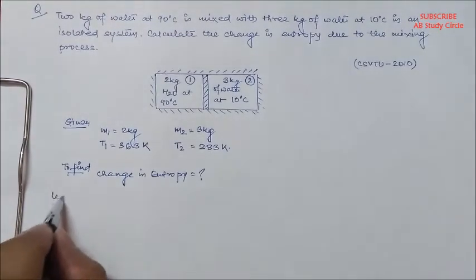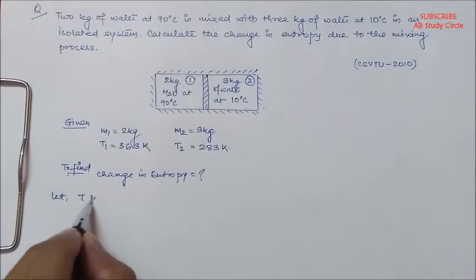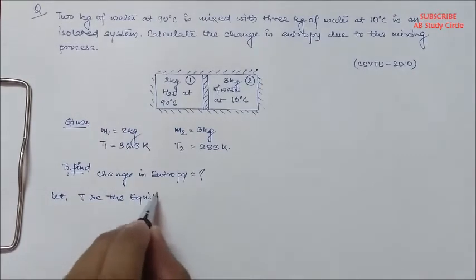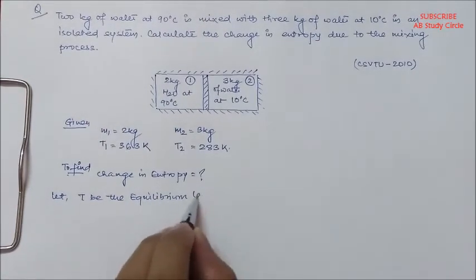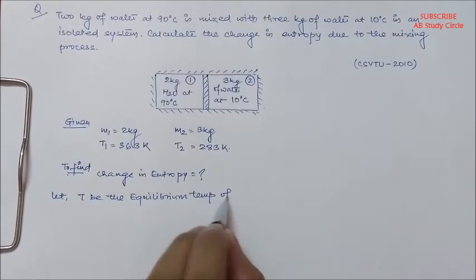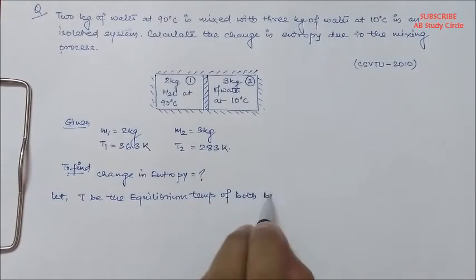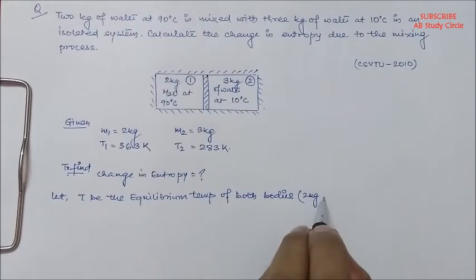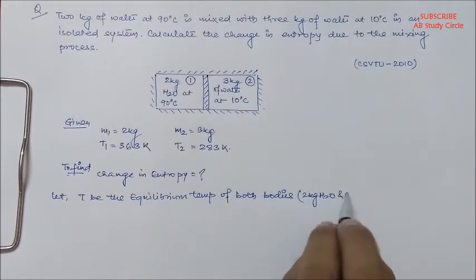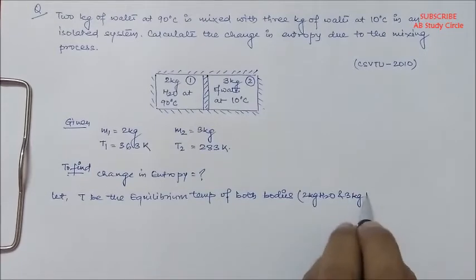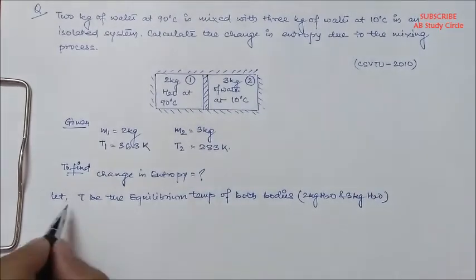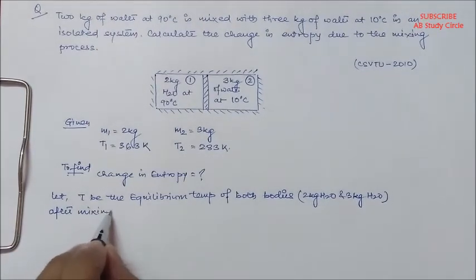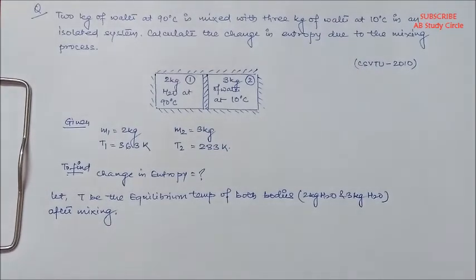So, let T be the equilibrium temperature of both bodies, that is 2 kg H2O and 3 kg H2O after mixing.